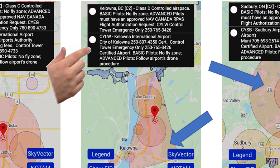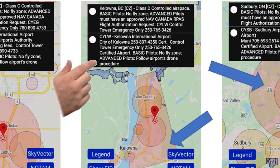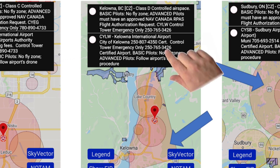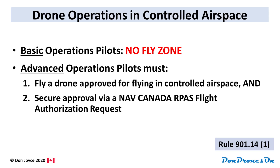The app shows what the area is, a quick reminder of the rules for both basic and advanced operations, and contact numbers. So what are the rules for flying your drone in controlled airspace? For basic operations pilots, controlled airspace is a complete no-fly zone.